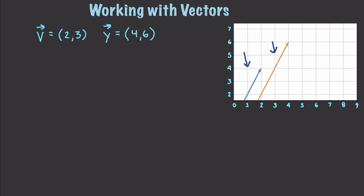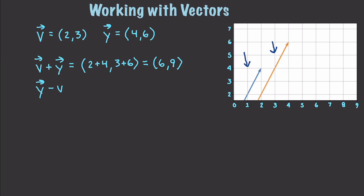And let's add a new vector Y. Simply adding these together means that we will take the two and add it to the four, and the three and add it to the six, giving us a final answer of six and nine. Subtracting them works probably the way that you would guess. In this situation, we would take the four, subtract the two from it, take the six, and subtract the three from it, to get a final answer of two and three.